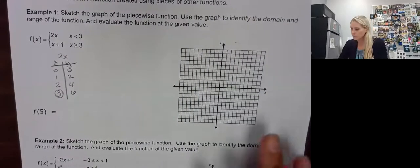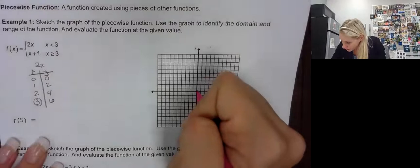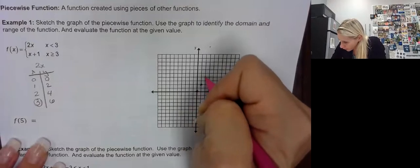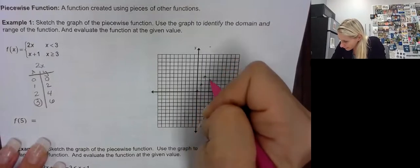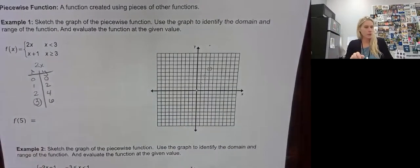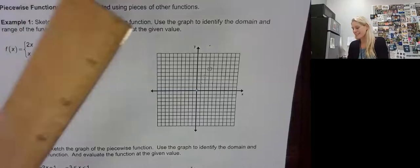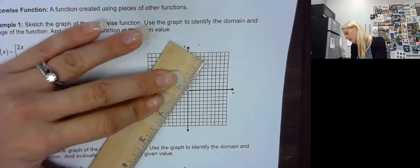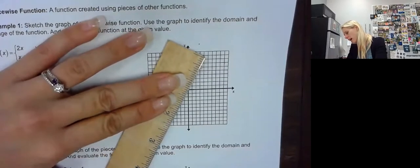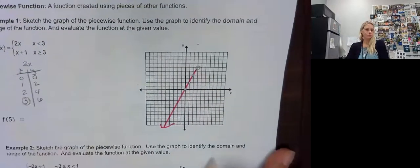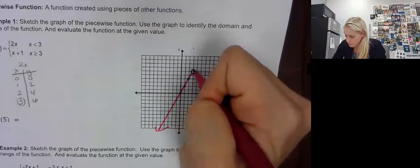I'm going to plot these points: (0,0), (1,2), (2,4), (3,6). Now at (3,6) I'm going to have an open circle. And don't forget it's less than 3, so that means it continues going to the left. I'm using a ruler to get it more accurate. It stops right here — it's open because it's not equal to.